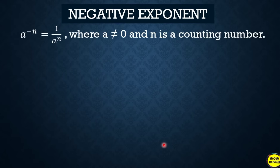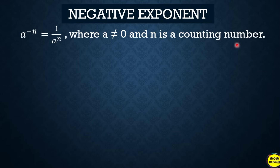Now for negative exponents: a raised to negative n is equal to 1 over a raised to n, where a is not equal to zero and n is a counting number. Whenever we see a negative exponent, we get the reciprocal. Always remember: negative exponent means take the reciprocal.